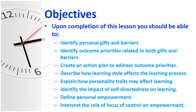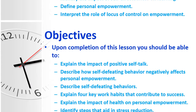Upon completion of this lesson, you should be able to identify personal gifts and barriers, identify outcome priorities related to both gifts and barriers, create an action plan to address outcome priorities, describe how learning style affects the learning process, explain how personality traits may affect learning, identify the impact of self-directedness on learning, define personal empowerment, and interpret the role of locus and control on empowerment.